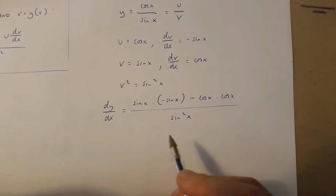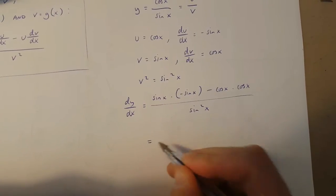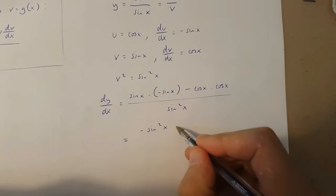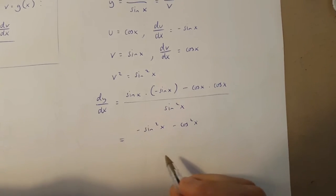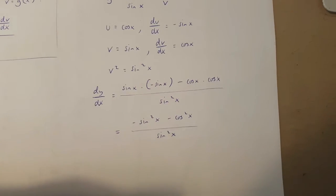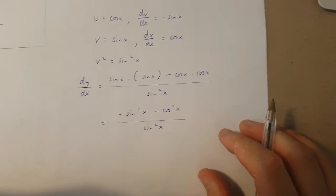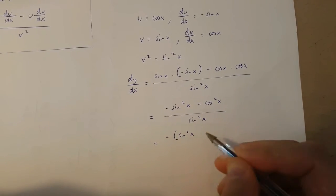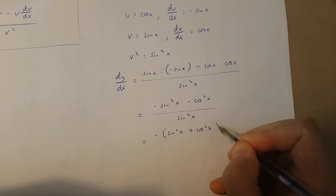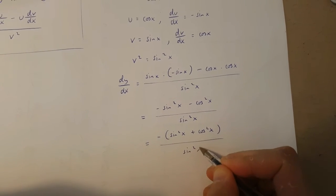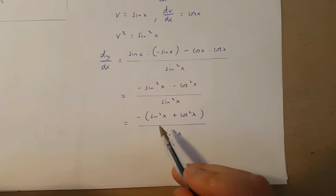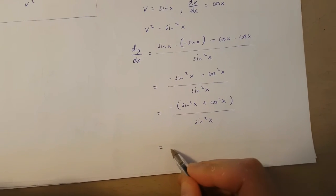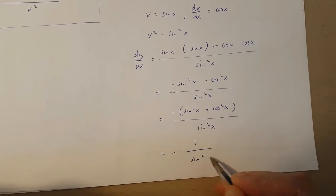Now this can be transformed into minus sin x squared minus cos x squared over sin x squared. And this is going to be equal to minus sin x squared plus cos x squared over sin x squared. But we know that sin x squared plus cos x squared is equal to 1, so what we really have is minus 1 over sin x squared.